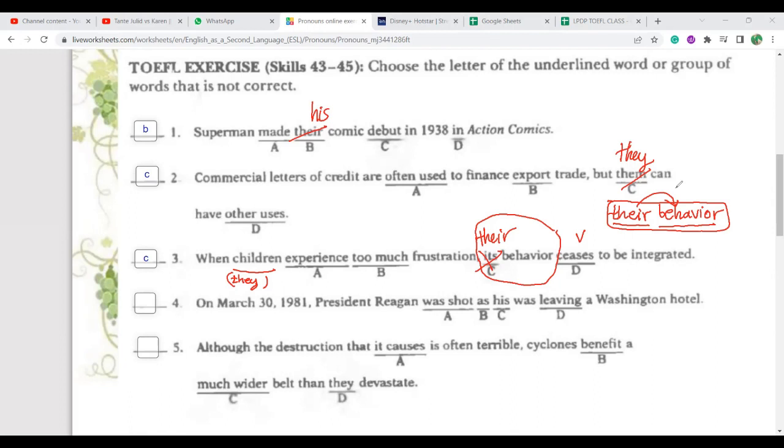We can go to number four. C should become he. So on March 30, 1981, President Reagan was shot as he was leaving a Washington hotel. So this S means when, when he was leaving the hotel in Washington.